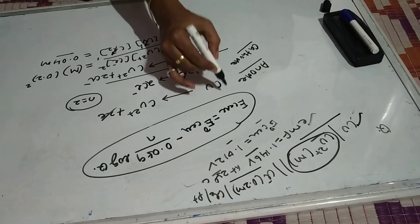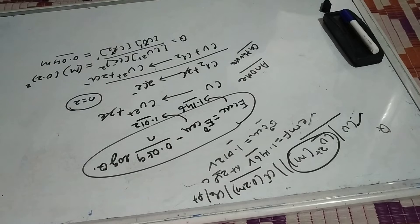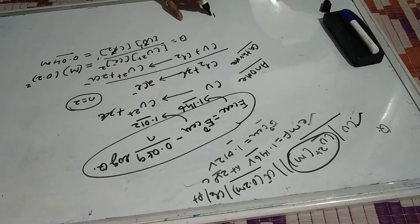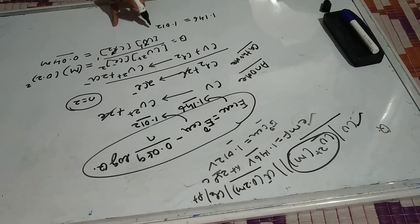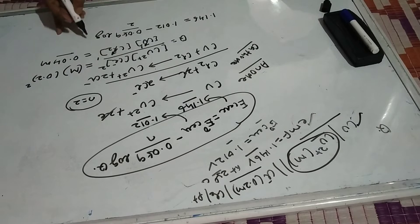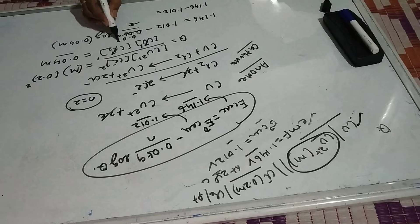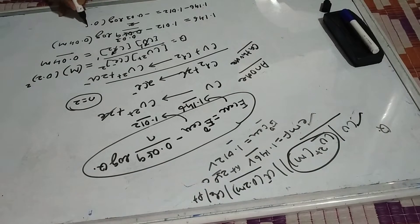The E cell value given in the question is 1.146 V, and E naught cell value is also given as 1.012 V. Now I will put all these values into the Nernst equation: 1.146 = 1.012 minus (0.059 / 2) into log Q. Taking terms to the left-hand side, 1.146 minus 1.012 gives approximately 0.134, and 0.059/2 is approximately 0.03, so we get minus 0.03 into log(0.04M).